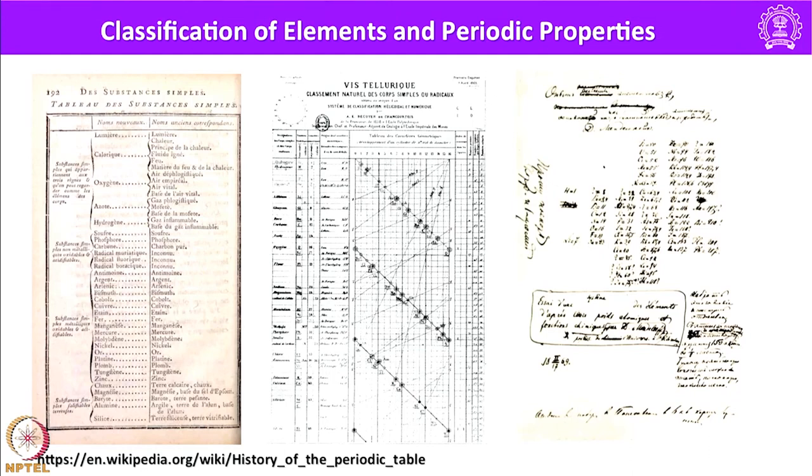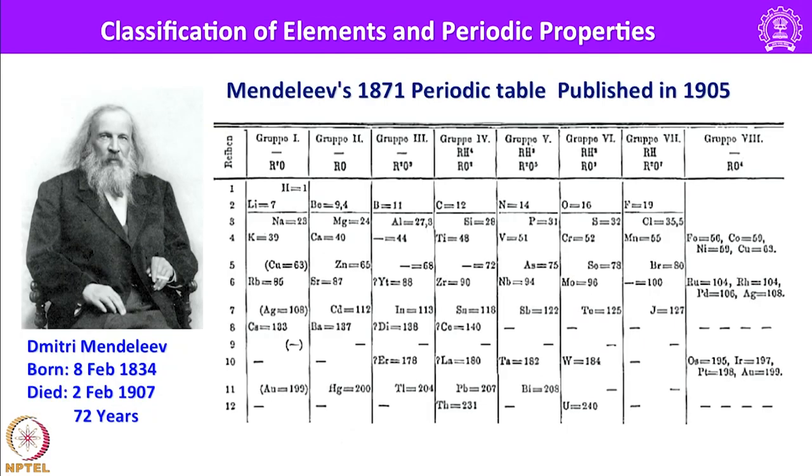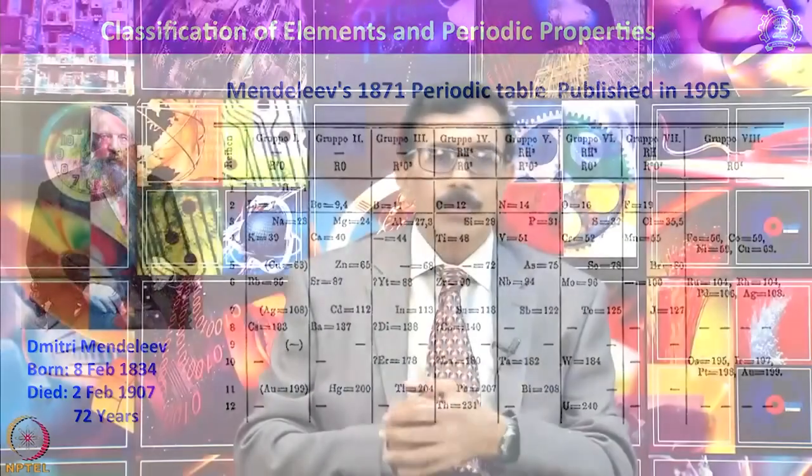This is Mendeleev's periodic table, published and accepted around 1871–1905. When Mendeleev proposed his periodic table, the structure of the atom and electrons were unknown. Electrons were discovered by J.J. Thomson in 1897 and modern atomic theory was proposed by Niels Bohr in 1913. Work by English physicist Henry Moseley on X-ray spectra showed that atomic number Z is a more fundamental property of an element than its atomic weight.